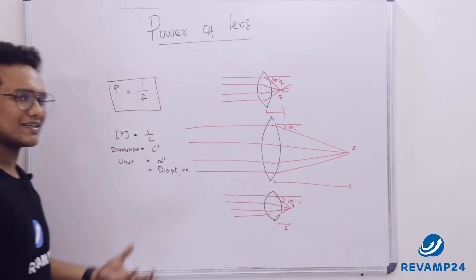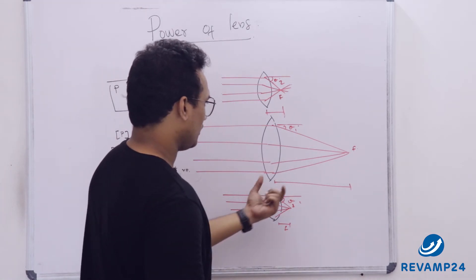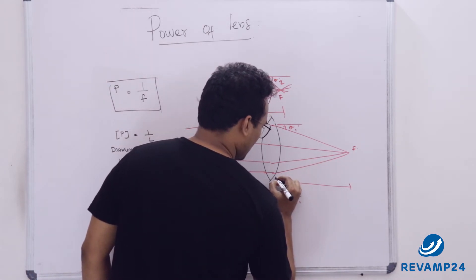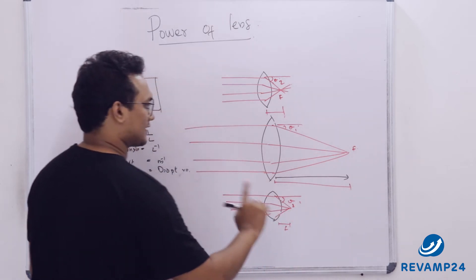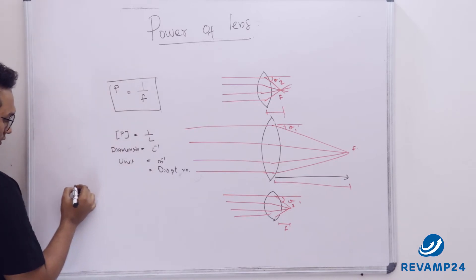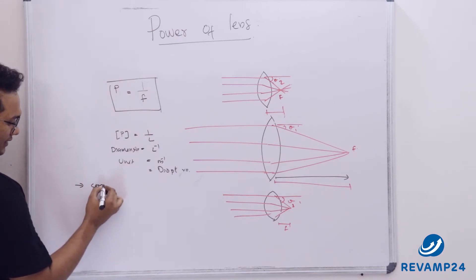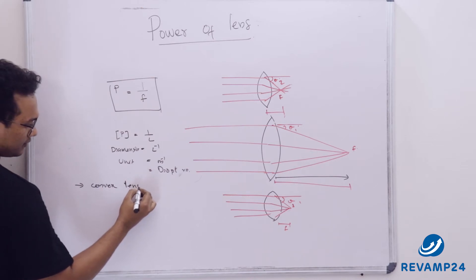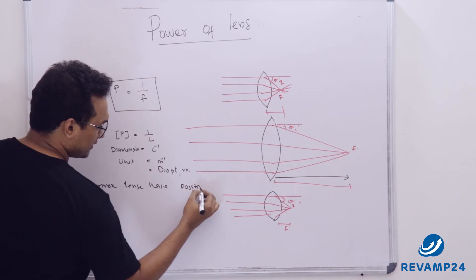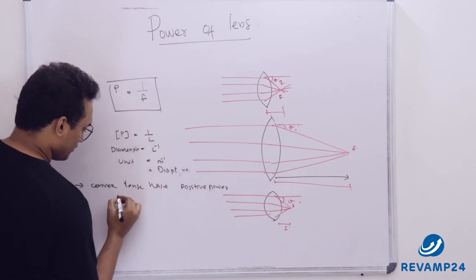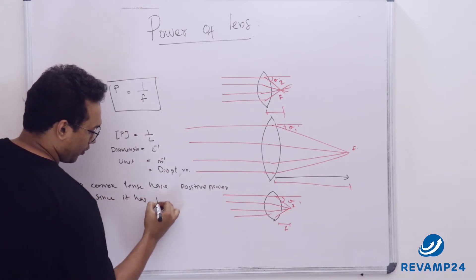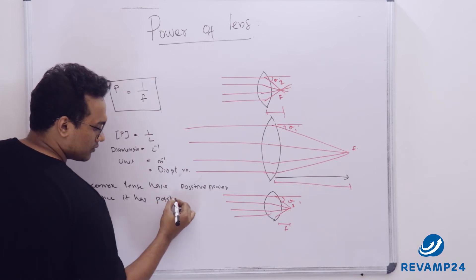For a convex lens, we know that focal length is measured from the principal axis in the forward or rightward direction. So for a convex lens, power would be positive. Point number 1: a convex lens has positive power, since it has a positive focal length.